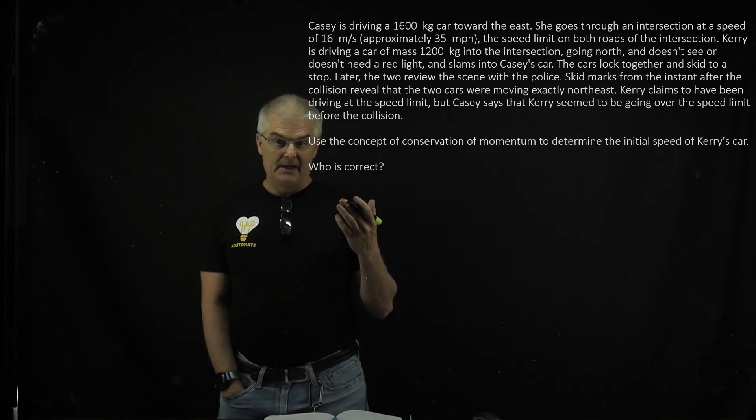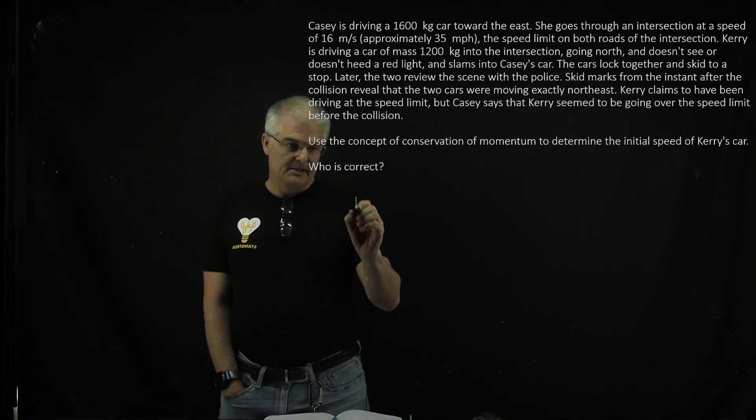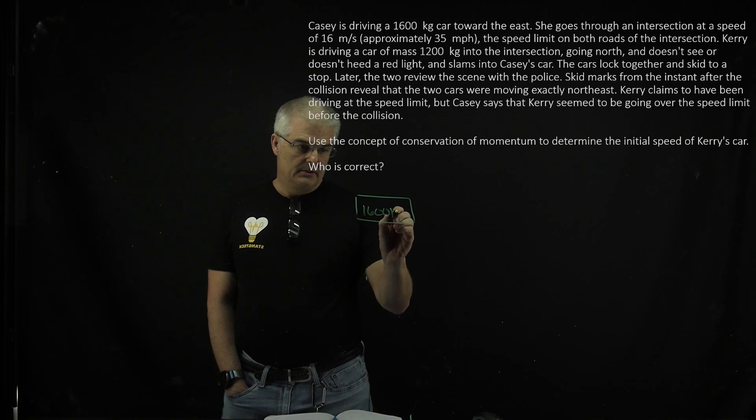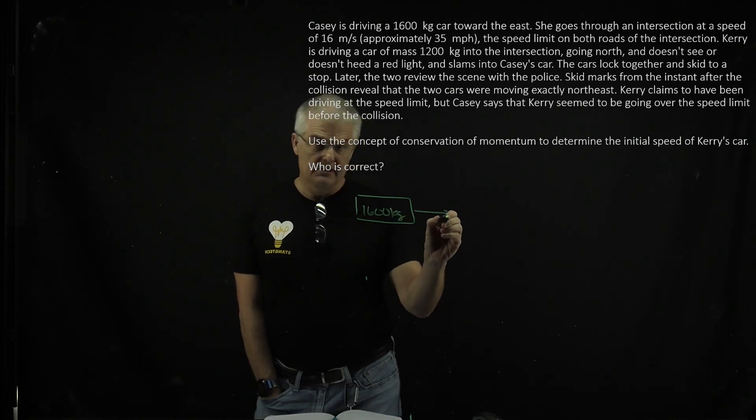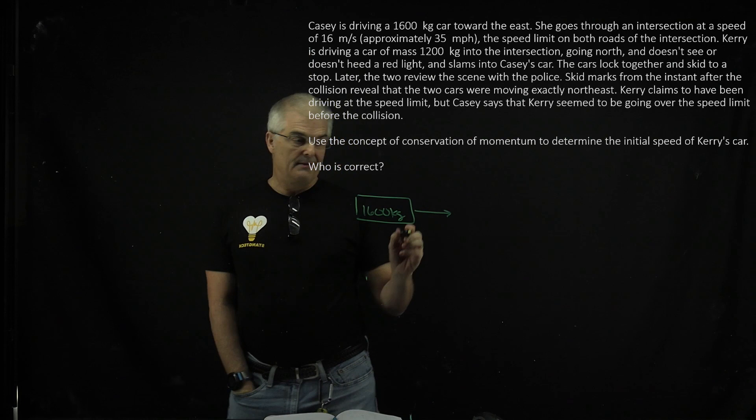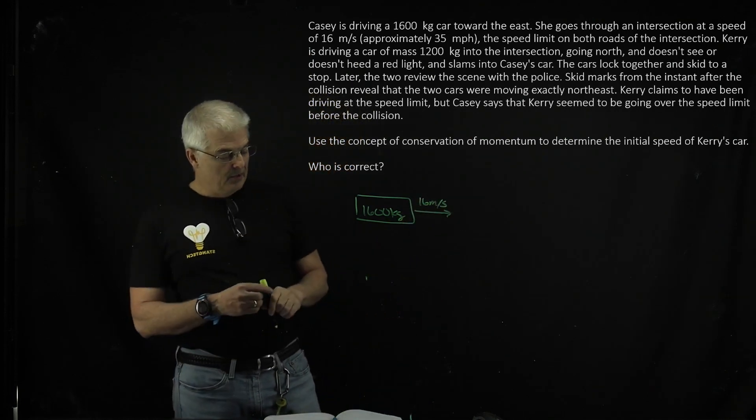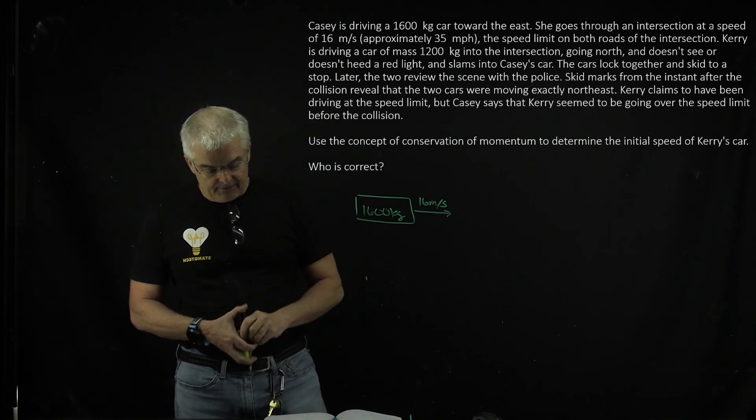So we've got Casey. He's driving a 1600 kilogram car and driving to the east. And she is traveling at 16 meters per second. Always start with a diagram that will make life a lot easier.